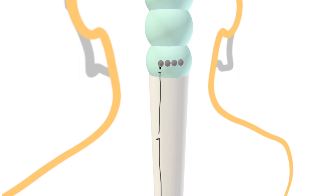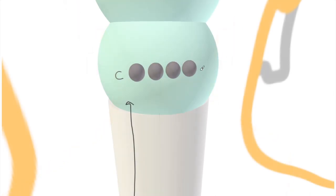We want the cuneate, obviously, and in there is the cell body of our second order neuron. Here we have C for cuneate and G for gracile nucleus.